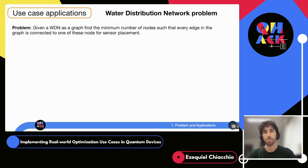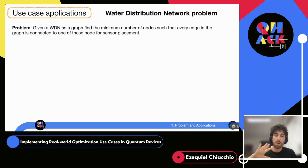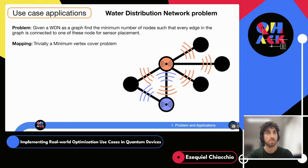The first application is water distribution networks. Think of pipes joined at certain places with water flowing through them, easily mapped as a graph. We want to place sensors on nodes such that we monitor the entirety of the network using the minimum number of sensors. This is trivially a minimum vertex cover problem — placing sensors at the MVC nodes means we survey the entire network and cannot reduce the number of sensors any further.